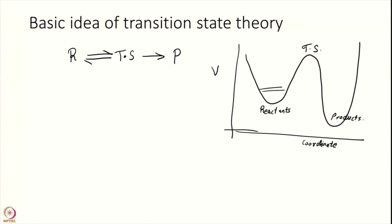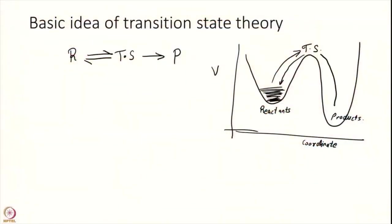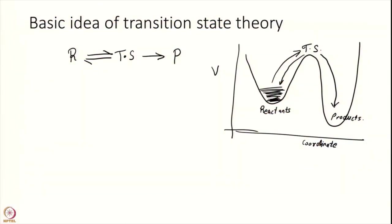We assume that initially I am at reactants, at thermal equilibrium with the transition state. Reactants can go to transition state, transition state can come back to reactants, but transition state can also fall down to products. One of the critical assumptions of Transition State Theory is that going from transition state to product is one way — there is no equilibrium, no back reaction from product to transition state. This is one of the critical assumptions and we are going to discuss these assumptions in great detail later. So I have k₁ here, k₋₁ here, and some k₂ here, and all these steps are assumed to be elementary.